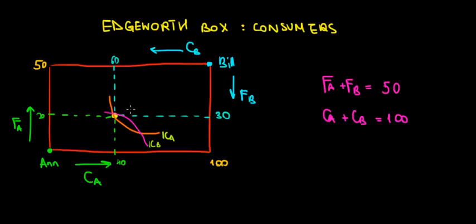Now let's look at their respective slopes. The slope is the change in y over the change in x — in this case, for N, the change in food relative to the change in clothing. If we draw the slope at a point on N's curve, it's going to be pretty steep, pretty vertical. So the MRS is going to be quite high.